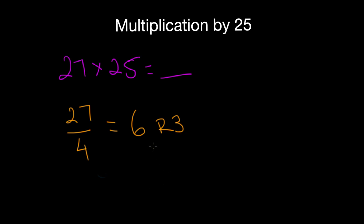Next what you do is you make 6 your hundredths digit, and then you multiply your remainder times 25. So in this case, 3 times 25 is equal to 75, and that would be your last two digits, and that's really all there is.